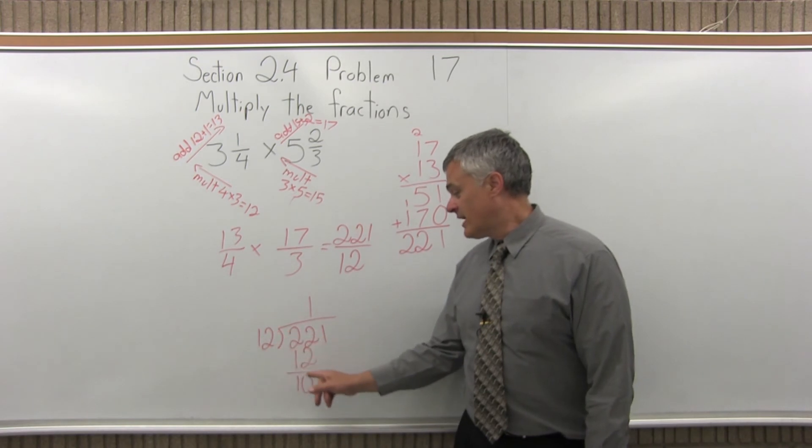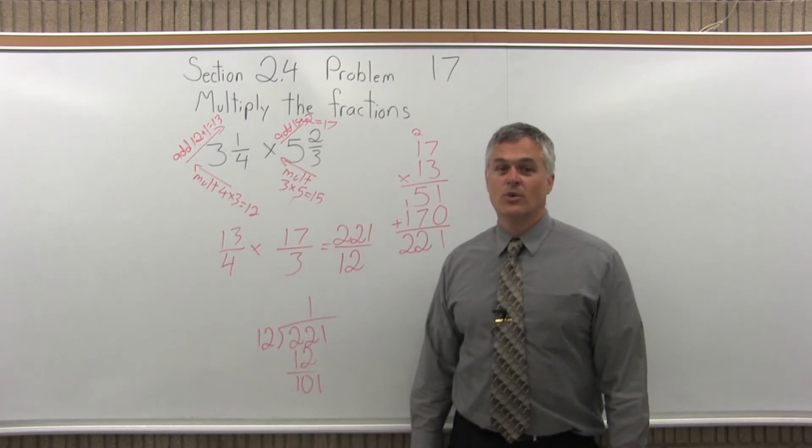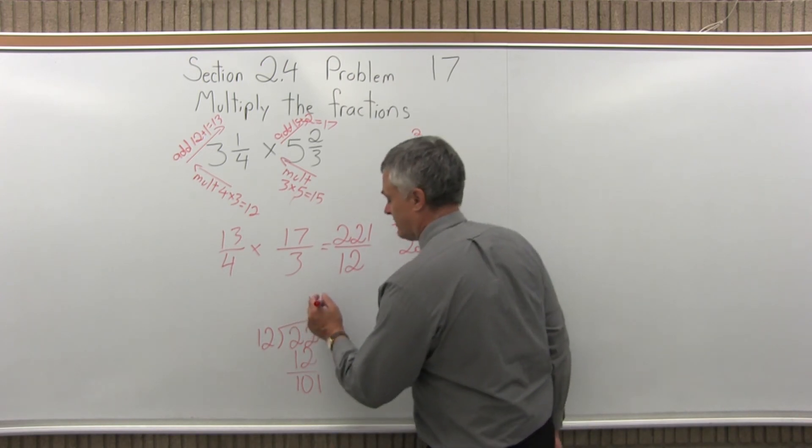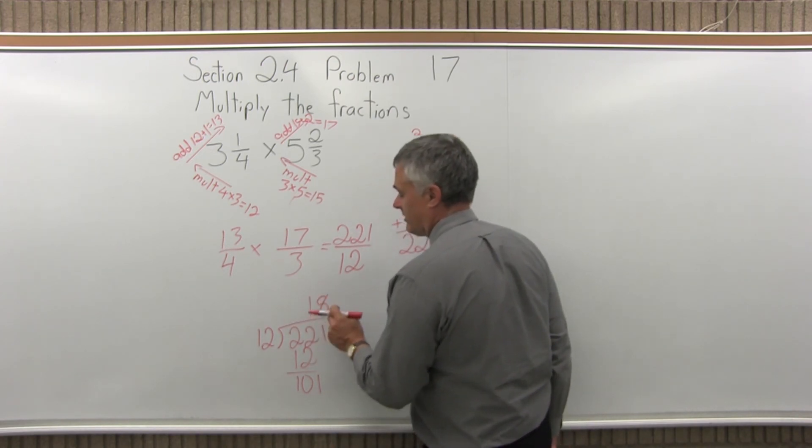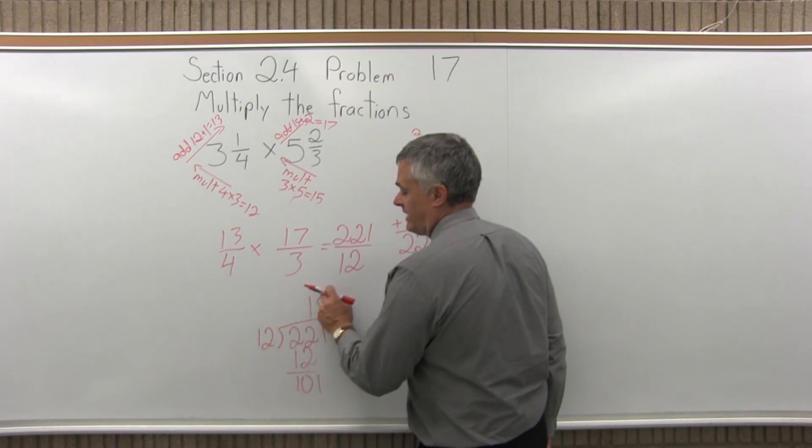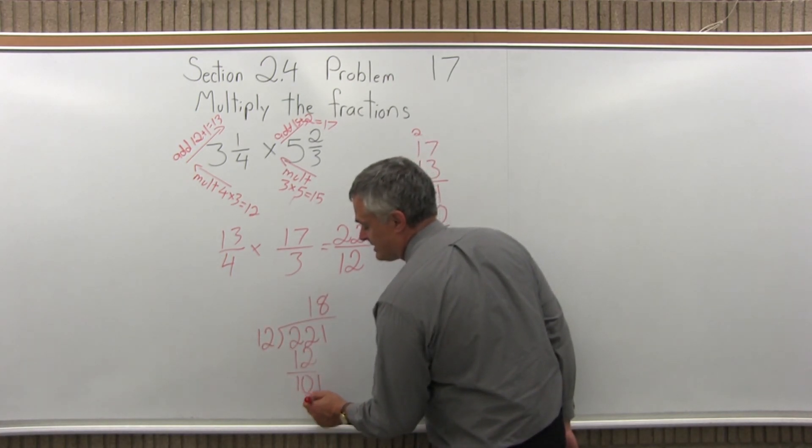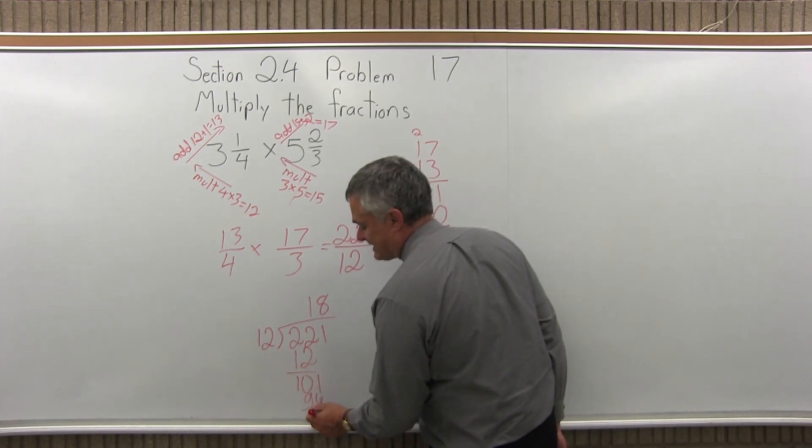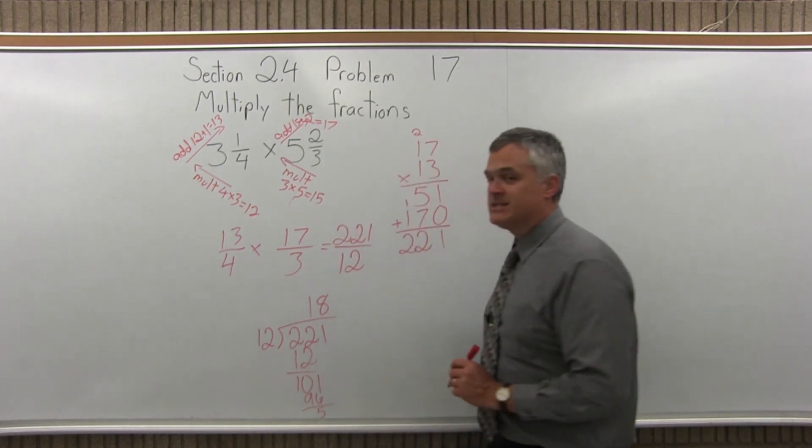How many times will 12 divide into 101? Well, I know that it's 8 times. 8 times 12 is 96, I remember that from having to memorize my multiplication tables. 8 times 12 is 96, and now I'll subtract 101 minus 96, I get 5. That's the remainder.